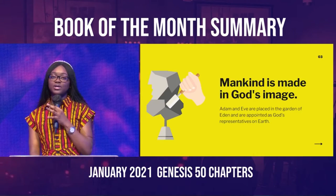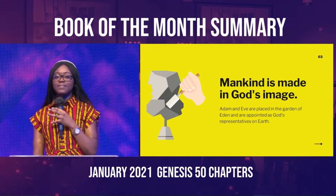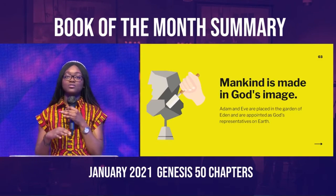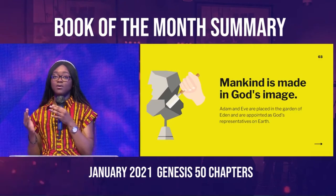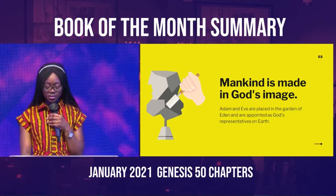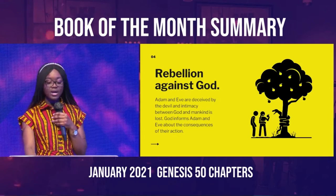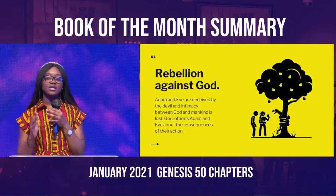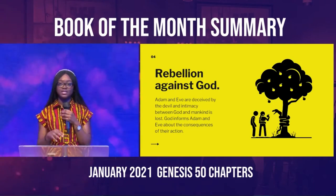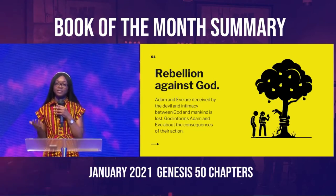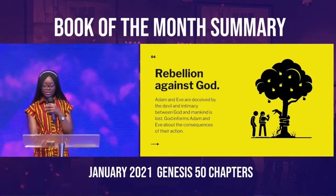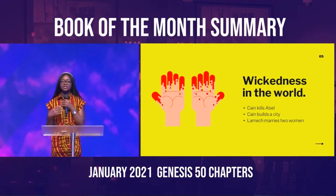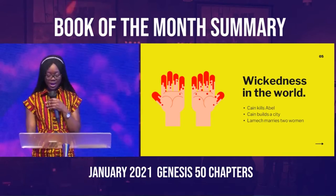God created Eve out of Adam, and they started the world. God gave them dominion to take over and care for all the other creatures he created. God gave them a choice — there was a tree of knowledge of good and evil — and they chose not to obey. They were tempted by the serpent, ate of the fruit, and wickedness came into the world. We see things like Cain killing Abel and the first polygamy, which was Lamech having two wives.